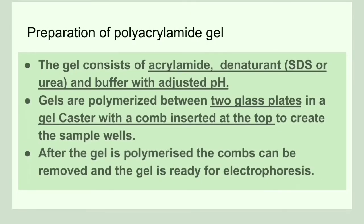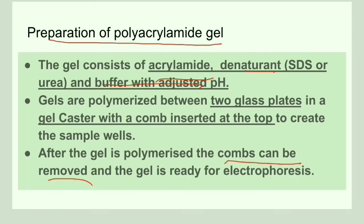Next, we will learn about the preparation of polyacrylamide gels. The polyacrylamide gels consist of acrylamide, a denaturant (SDS for protein and urea for nucleic acid), and a buffer with adjusted pH. These gels are polymerized between two glass plates, and wells are created using combs. After polymerization is complete, the combs are removed so that the gel is ready for electrophoresis.